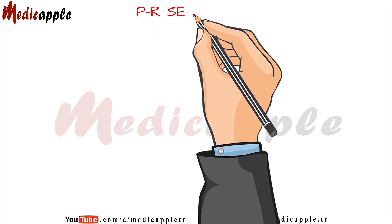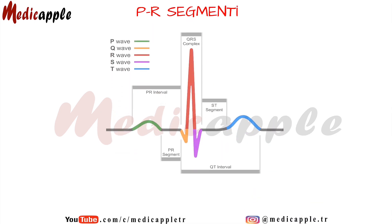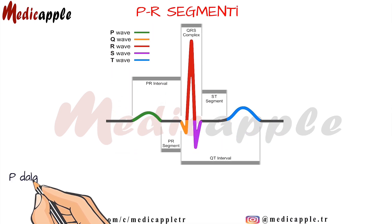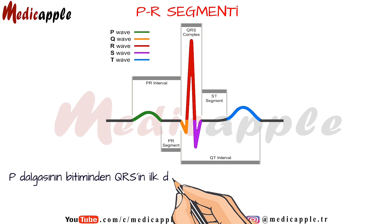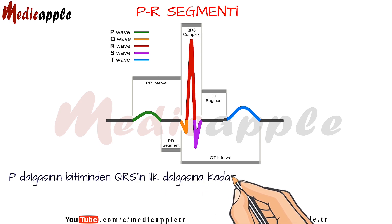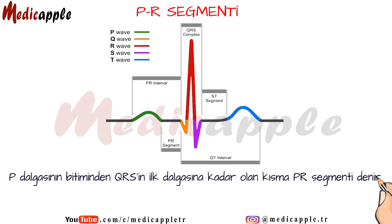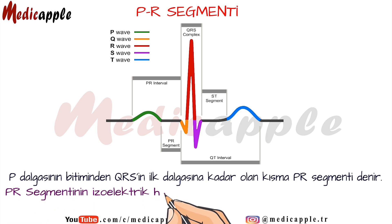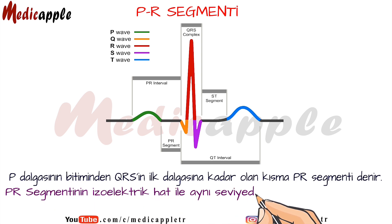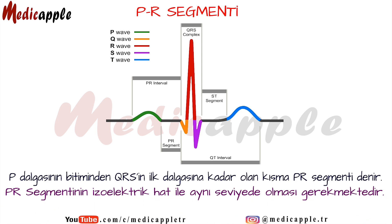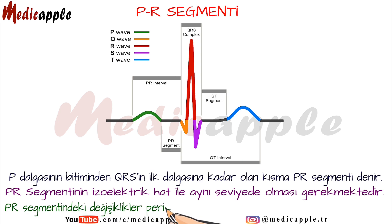PR segment. The part from the end of the P wave to the first wave of the QRS is called the PR segment. The PR segment must be at the same level as the isoelectric line. Changes in the PR segment occur due to pericarditis or atrial ischemia.